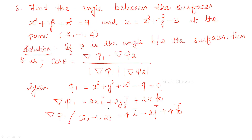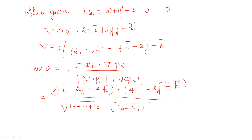Next: find the angle between the surfaces. This is an important problem — almost all these problems are repeated university questions. Let the first surface be phi1 and the second be phi2. If theta is the angle between the surfaces, then cos theta = (del phi1 · del phi2) / (|del phi1| × |del phi2|). Find del phi1 and del phi2 separately, take the dot product, and divide by the product of their moduli.